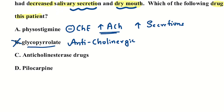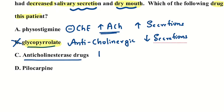Where do we use glycopyrrolate? It is mainly used for pre-anesthetic medication because it decreases secretions — used pre-anesthetically to decrease the chances of aspiration pneumonia and also to decrease the chances of reflex vagal bradycardia. Anticholinergic drugs increase acetylcholine and secretions, and pilocarpine is also a cholinergic drug which increases secretions.